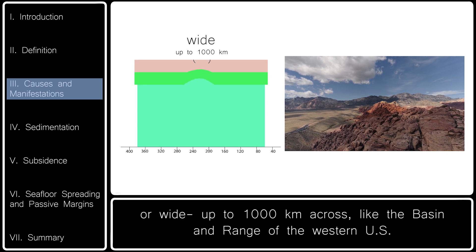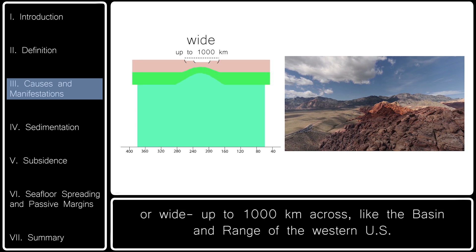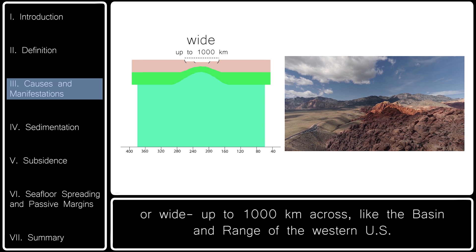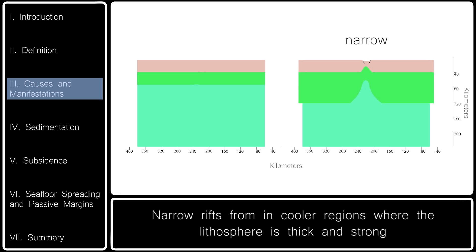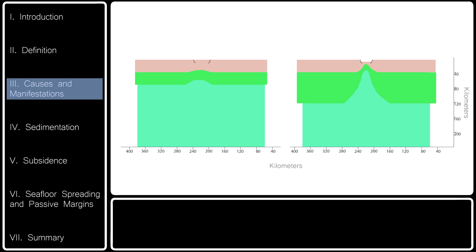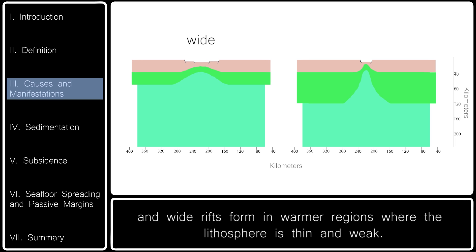Or wide, up to 1,000 kilometers across, like the Basin and Range of the western U.S. Narrow rifts form in cooler regions where the lithosphere is thick and strong, and wide rifts form in warmer regions where the lithosphere is thin and weak.